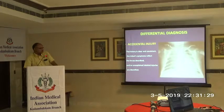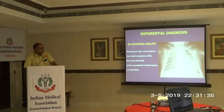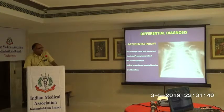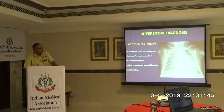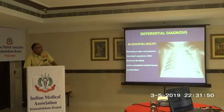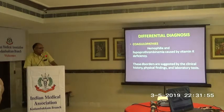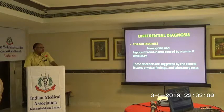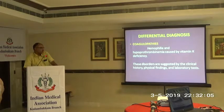Differential diagnosis: accidental injury — the main thing is the history is clear, consistent, and reflects the forces described, with no unexplained skeletal injuries identified. Another differential is coagulopathy — hemophilia, thrombocytopenia, causing vitamin K deficiency — these will also cause fractures. You have to differentiate by doing a blood test.